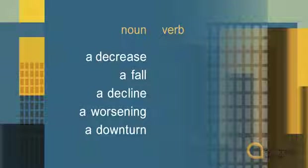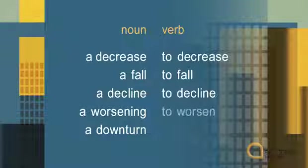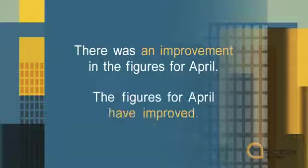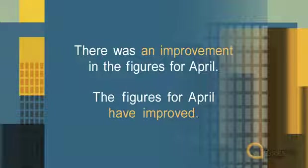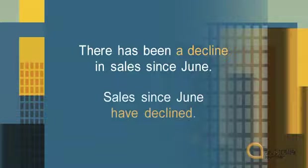These also have verbs: to decrease, to fall, to decline, to worsen. So we say, there was an improvement in the figures for April, or the figures for April have improved. There has been a decline in sales since June, or sales since June have declined.